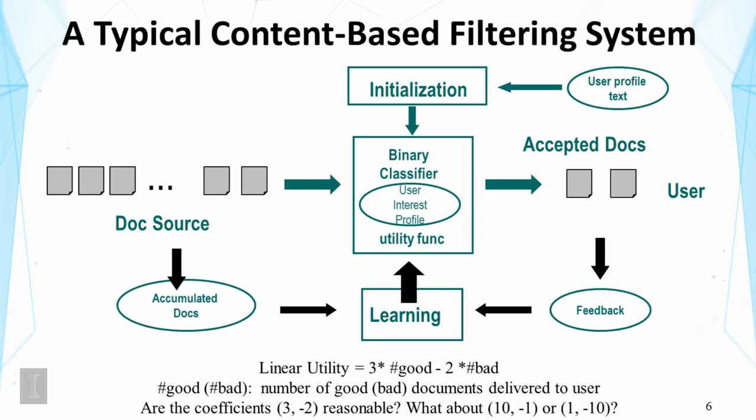How do we evaluate such a system? We cannot use ranking evaluation measures like MAP, because we can't afford to wait for many documents and then rank them to make a decision for the user. The system must make a decision in real time — deciding whether an item is above the threshold or not. In other words, we are trying to decide absolute relevance.